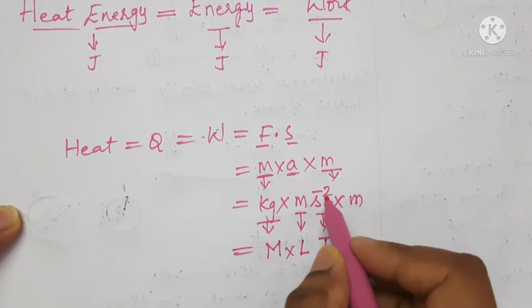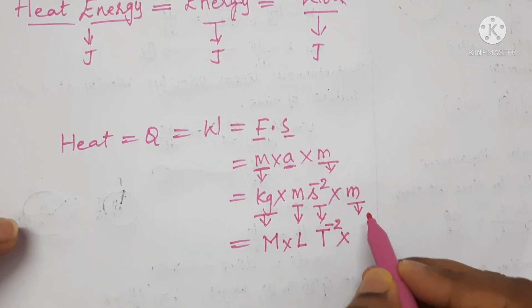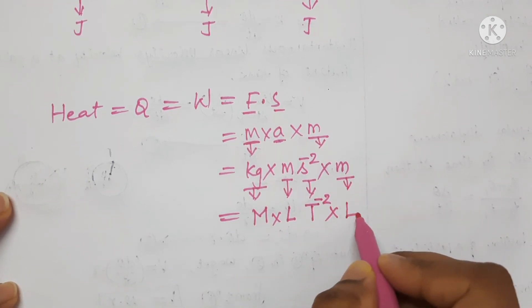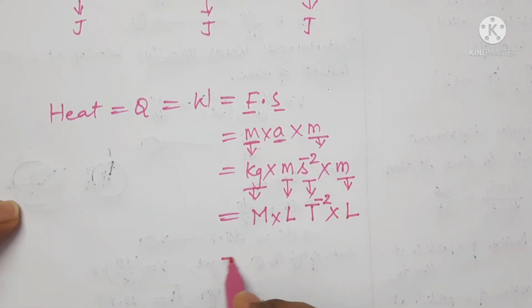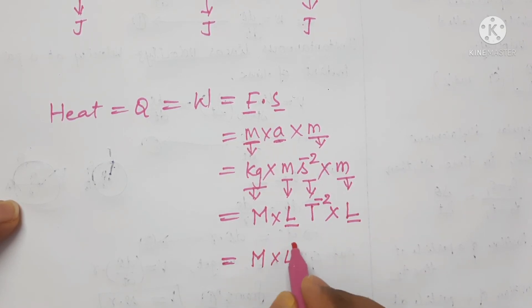Here s to the power of minus 2 is there, so T power minus 2. And again here it is meter. Meter is expressed in terms of capital L, which is equal to M L into L, L square and here it is T power minus 2.